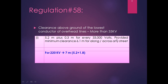For system voltage exceeding 33 kV, the formula is 5.2 meter plus 0.3 meter for every additional 33 kV. For 66 kV the clearance is 5.2 + 0.3 = 5.5 meter. It is also provided that the minimum clearance shall be 6.1 meter along or across any street. For 220 kV: 5.2 + (6 × 0.3) = 5.2 + 1.8 = 7 meter. Since 7 meter exceeds 6.1 meter, this 7 meter applies along a street, across a street, or ground where no street is involved — the limit is the same for all.